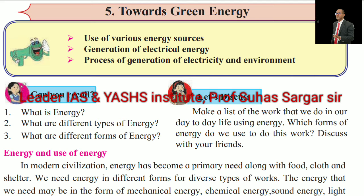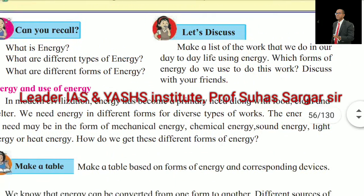Towards Green Energy covers: use of various energy sources, generation of electrical energy, and the process of generation of electricity and environment. So, what is energy? What are the different types of energy? What are the different forms of energy? Let us discuss. Make a list of the work that we do in our day-to-day life using energy. Which forms of energy do we use to do this work? Discuss with your friend.